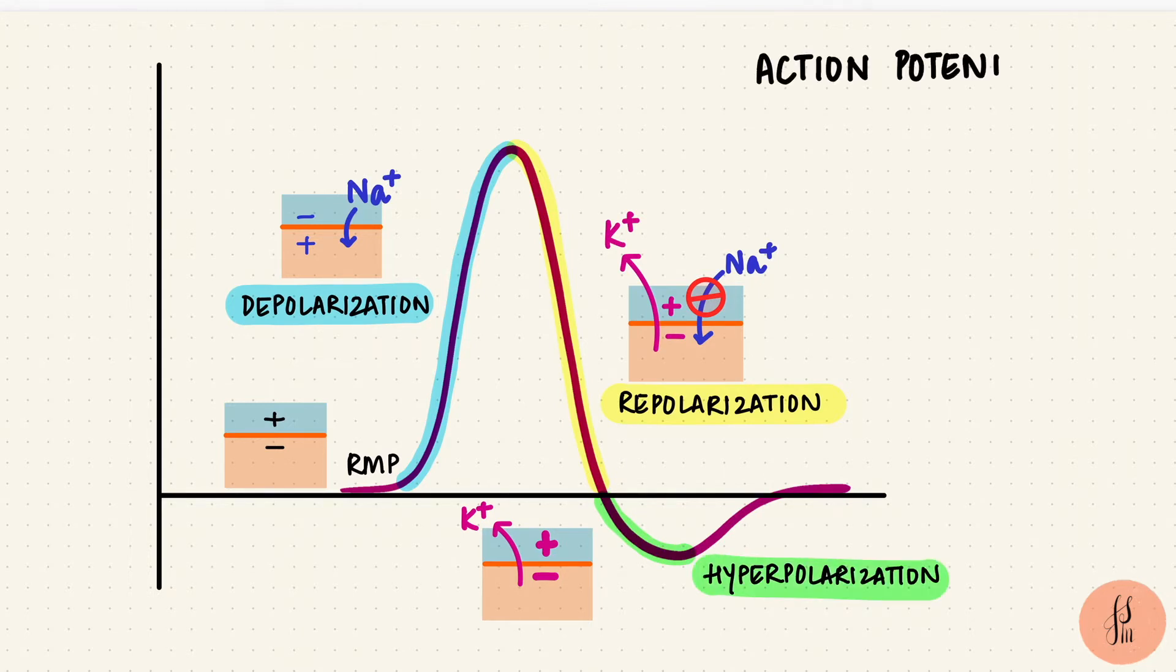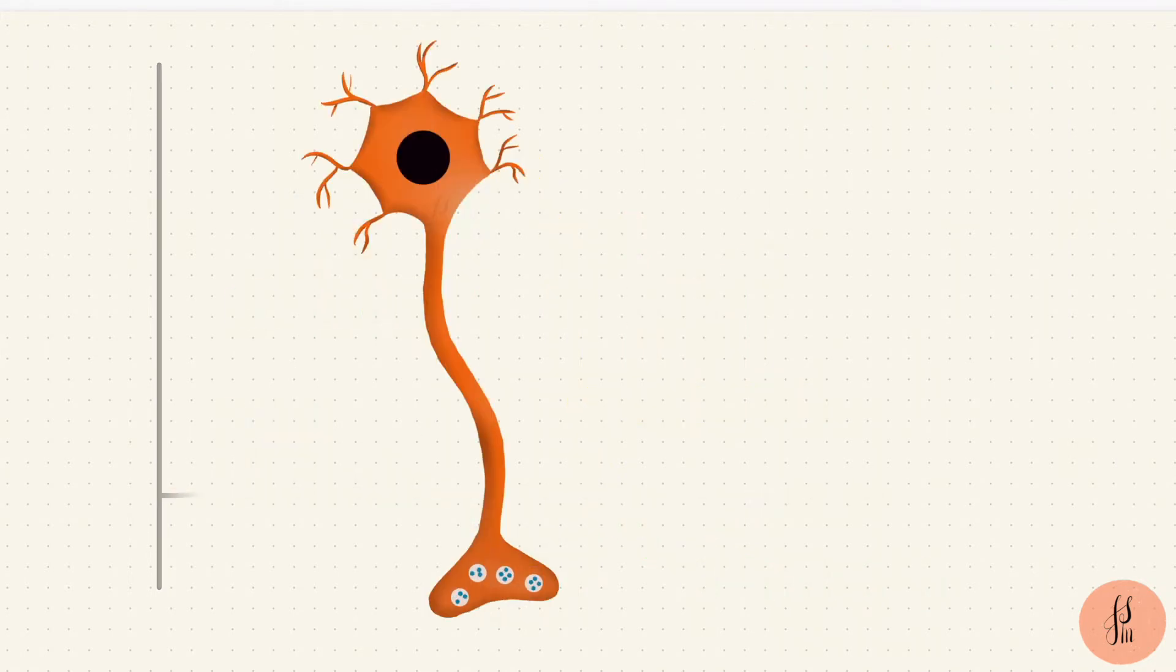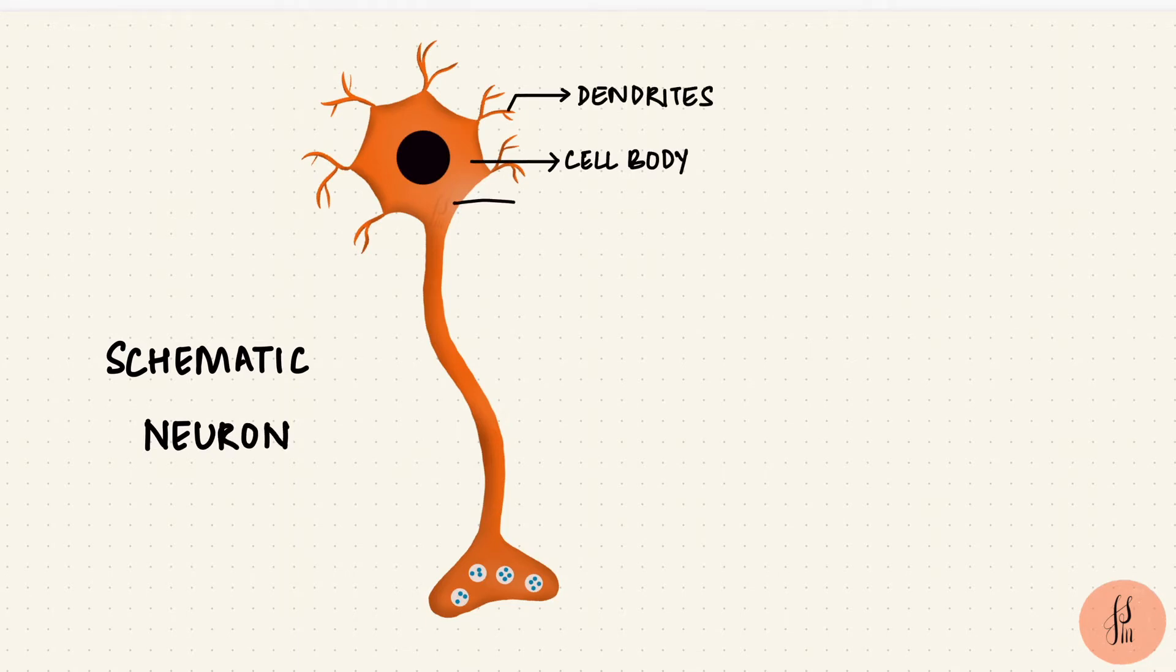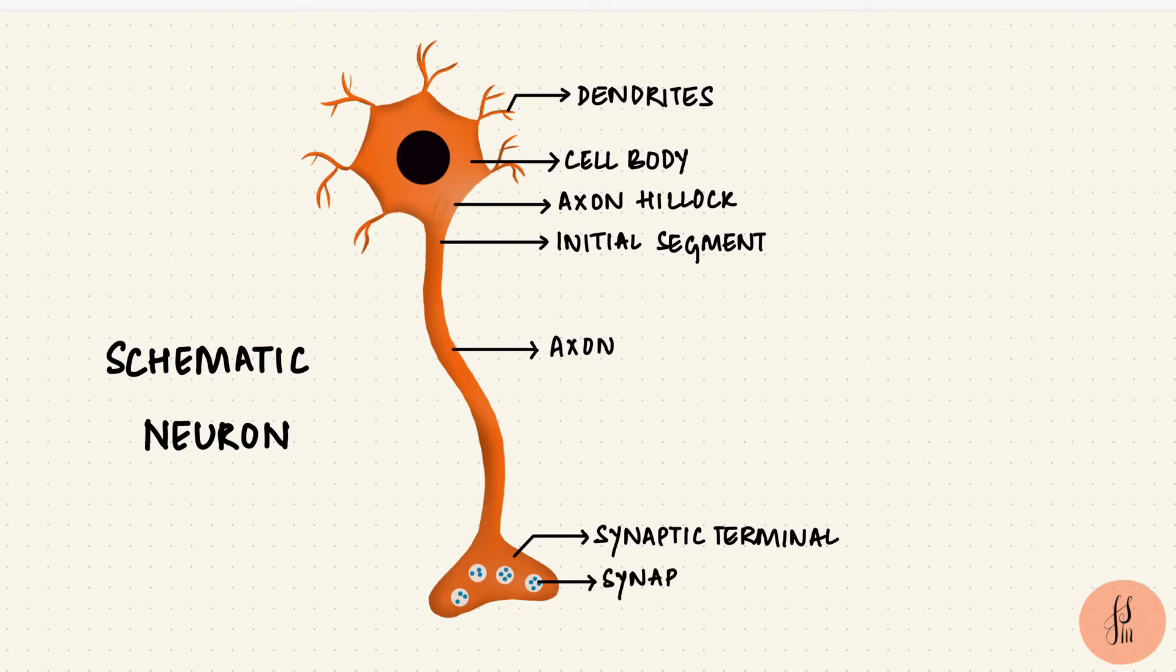Now let's see how these phases of an action potential happen. We're going to be looking at the action potential in neurons, so we'll use this schematic neuron. It has dendrites, a cell body, the axon hillock, the initial segment which is the first part of the axon, and the axon ends in synaptic terminals. I've just drawn one synaptic terminal to represent them since it's schematic, and these terminals have synaptic vesicles.